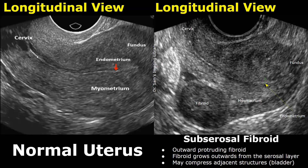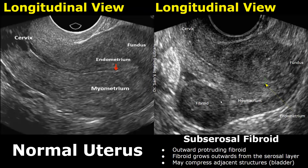And this is a subserosal fibroid. This type of fibroid grows outwards and distorts the contour of the uterus. It may compress adjacent structures such as the bladder. If we see this type of fibroid, it is a subserosal fibroid.